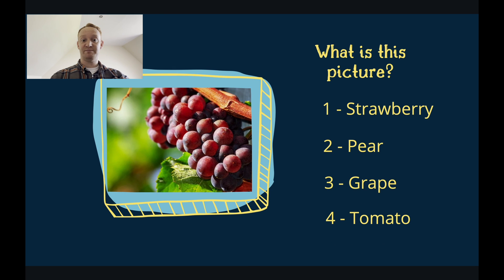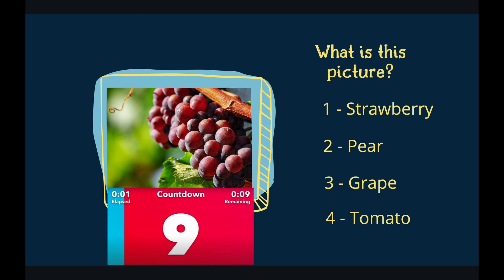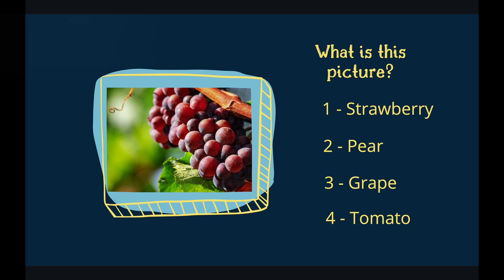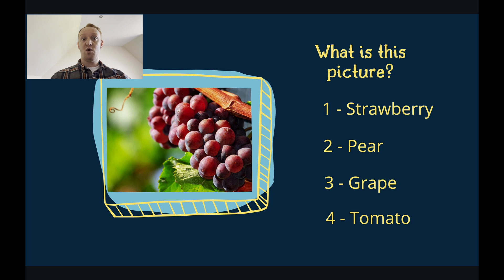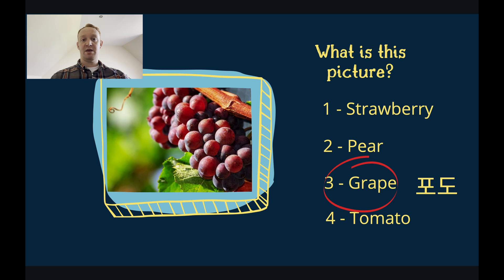What is this a picture of? Is it strawberries? Is it pears? Is it grapes? Or is it tomatoes? You have 10 seconds to answer. It is grapes. These grapes are red. These grapes grow on vines. Grapes taste very nice.